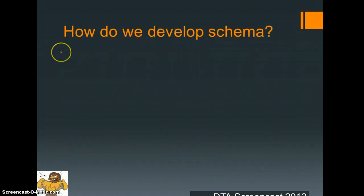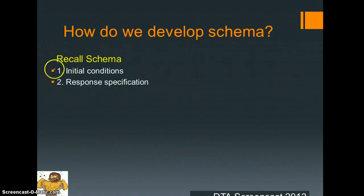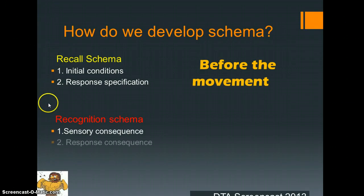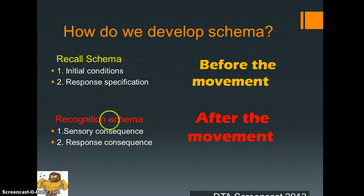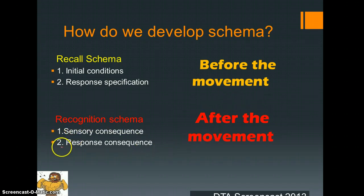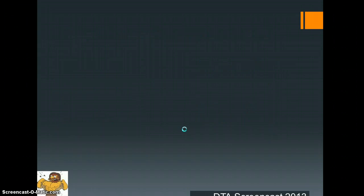So how do we actually develop these schemas and experiences? There are four different sections broken down into two different areas: the recall schema and the recognition schema. The recall schema is performed before the movement takes place and is broken down into initial conditions and response specifications. The recognition schema occurs after the movement and covers sensory consequences and response consequences. The key thing to highlight is before and after the movement.